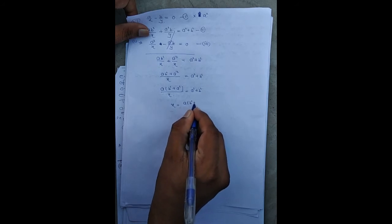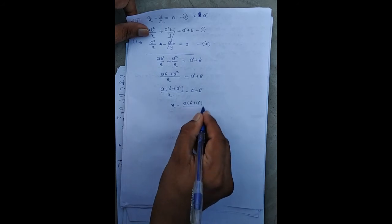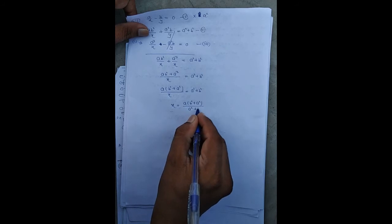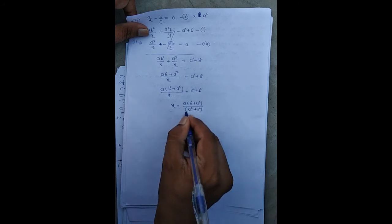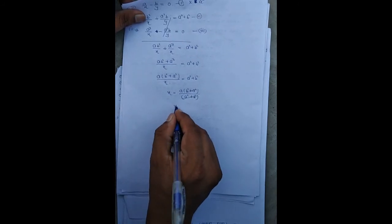a(b² + a²)/(a² + b²), and this term cancels. The value of x is a.